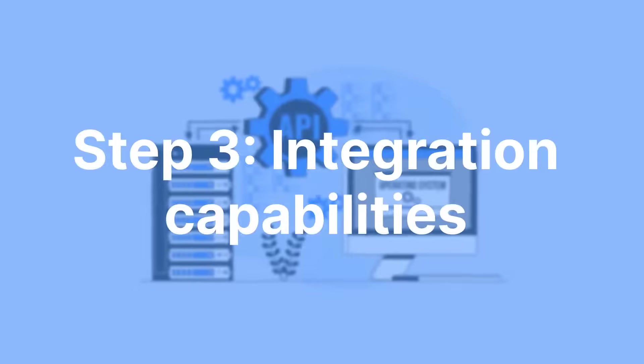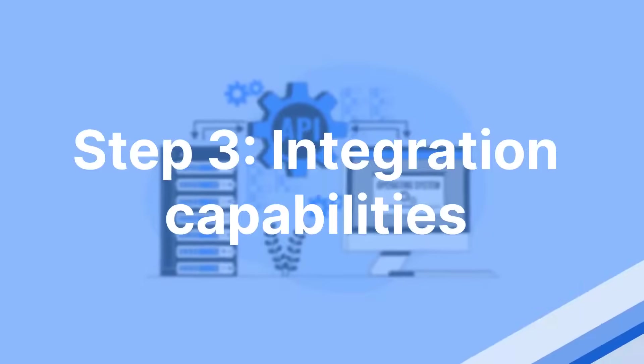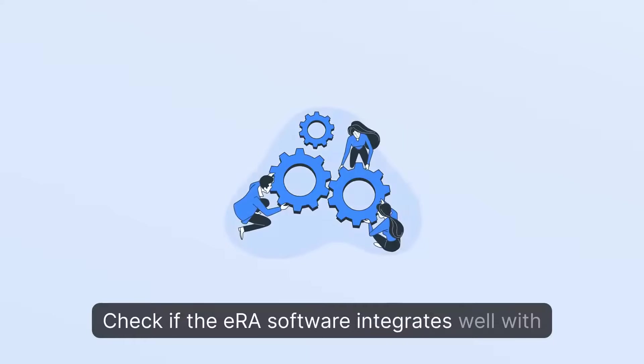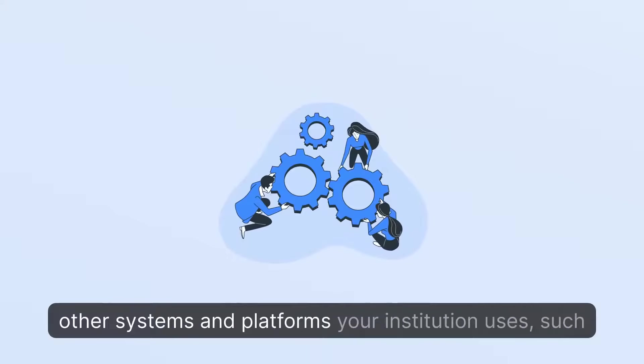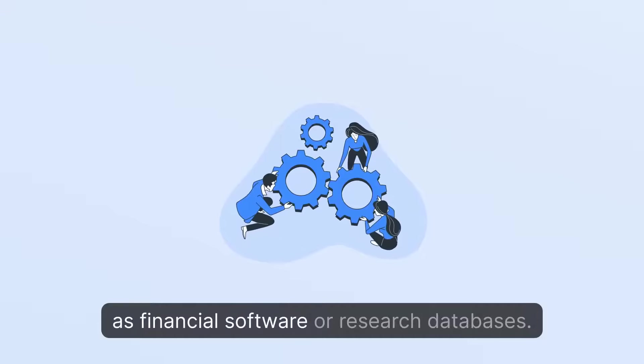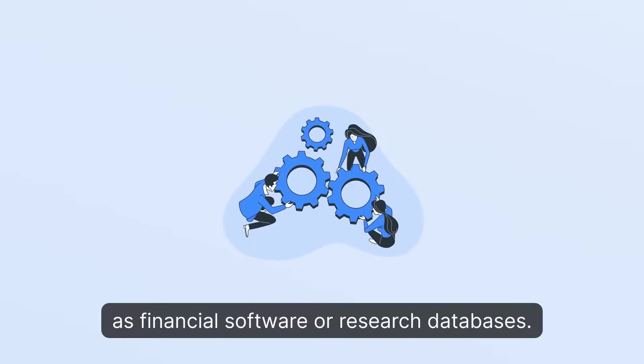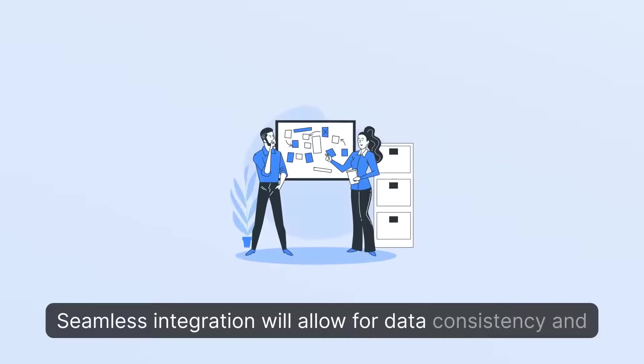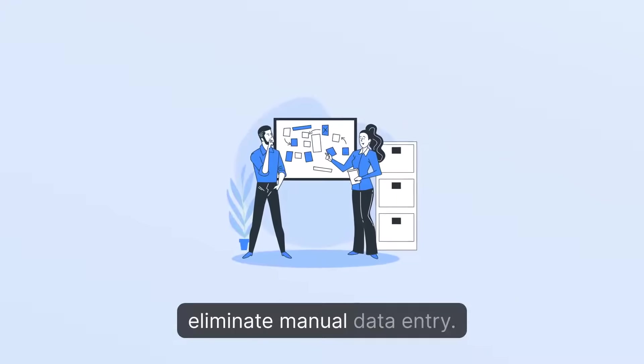Step 3. Integration Capabilities. Check if the ERA software integrates well with other systems and platforms your institution uses, such as financial software or research databases. Seamless integration will allow for data consistency and eliminate manual data entry.